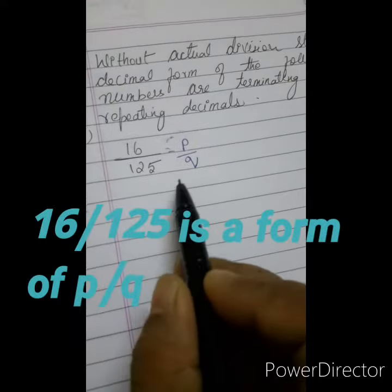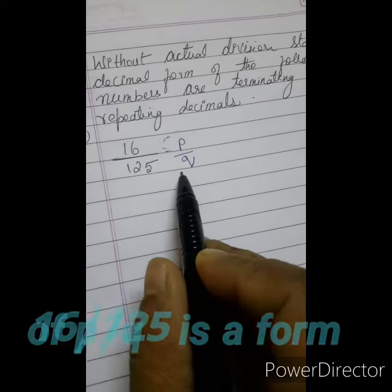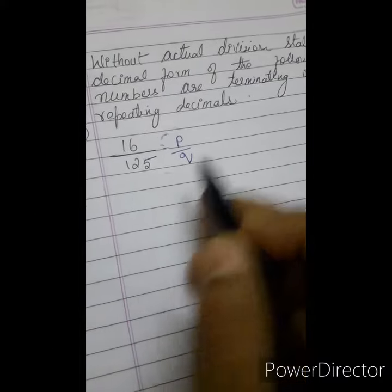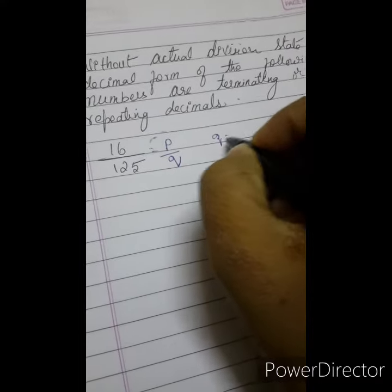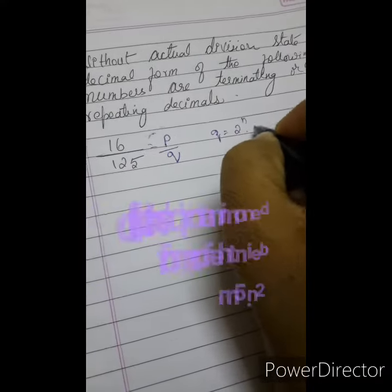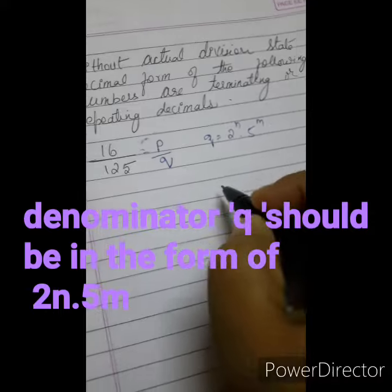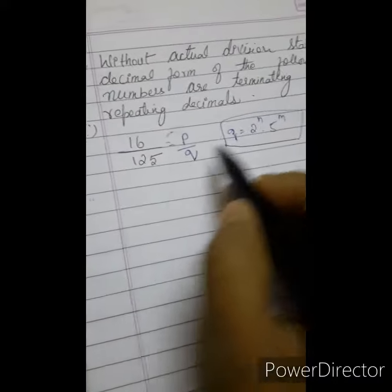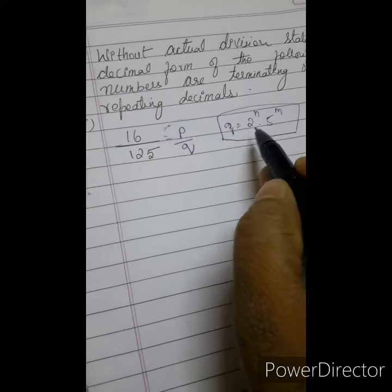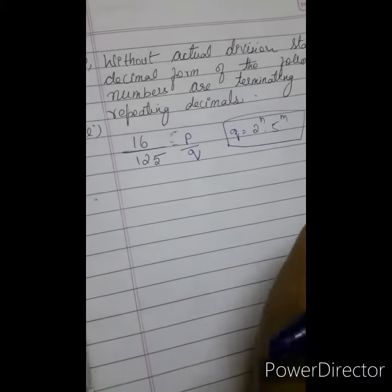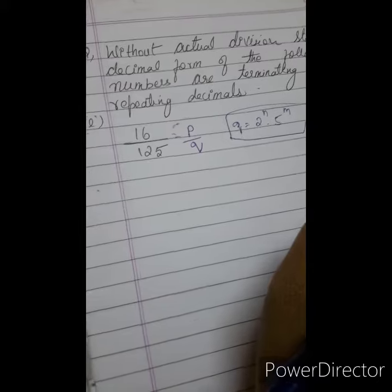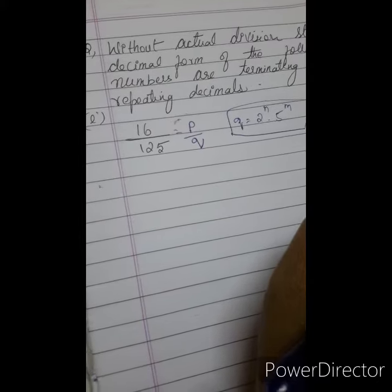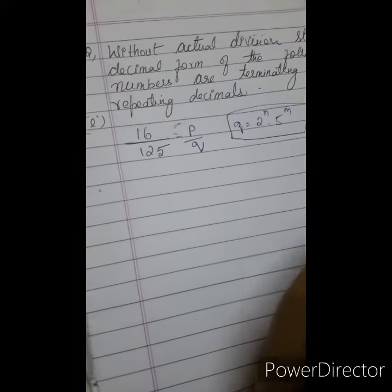Okay, your denominator Q should be in the form of 2 power n into 5 power m. If Q, the denominator, which is 125, if you can write it in this way, then this is a terminating decimal. Otherwise non-terminating repeating decimal.